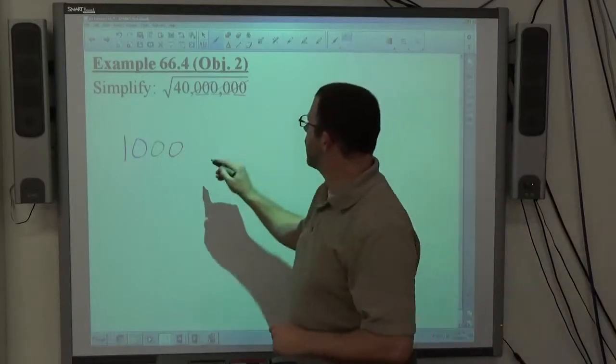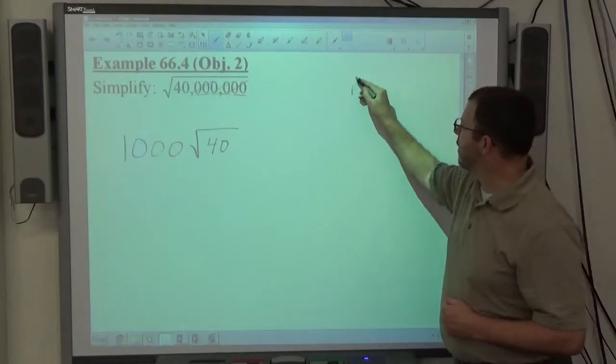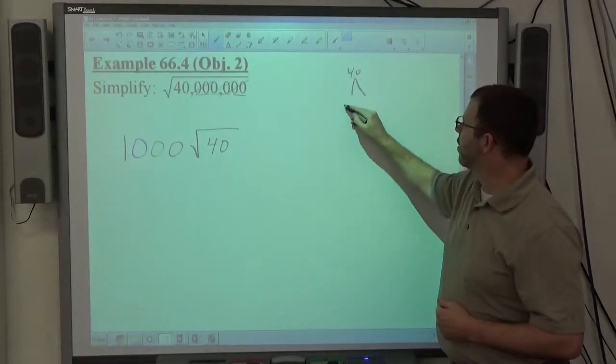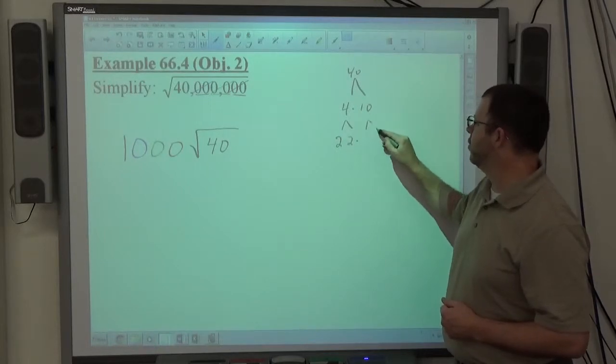I still have a square root of 40 left in, okay? If I consider 40, prime factorization of 40, I go 4 times 10 first, 4 is 2 times 2, and 10 is 2 times 5.